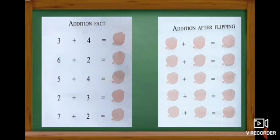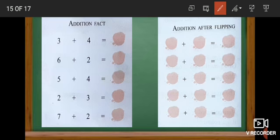Now we are going to do addition facts. Look at here: three plus four. What we get? Three in the mind, four in the finger. After three: four, five, six, seven. When we add three plus four we get seven.